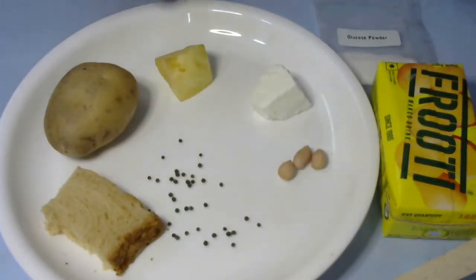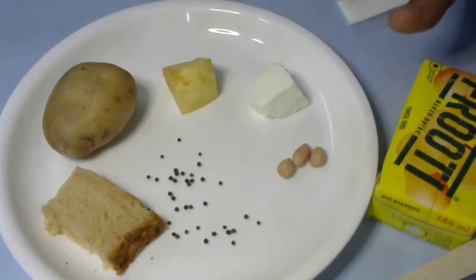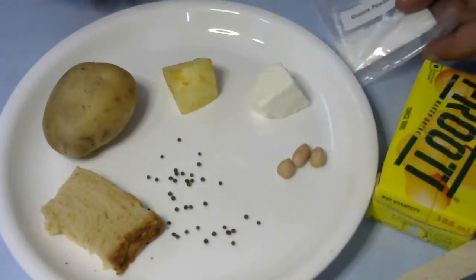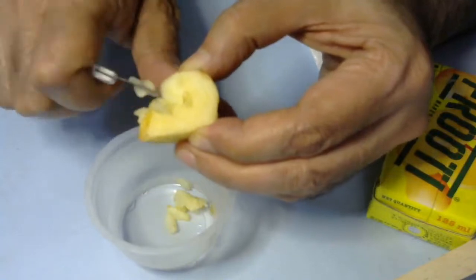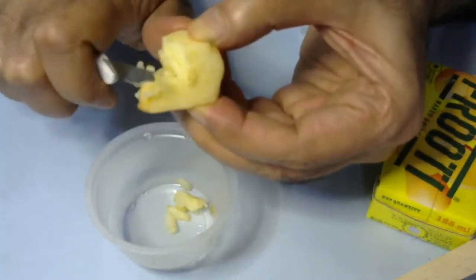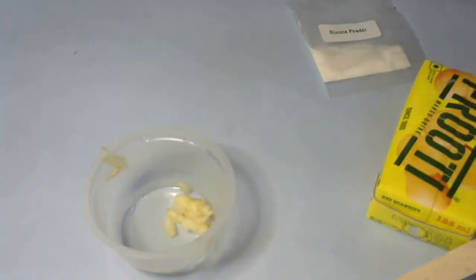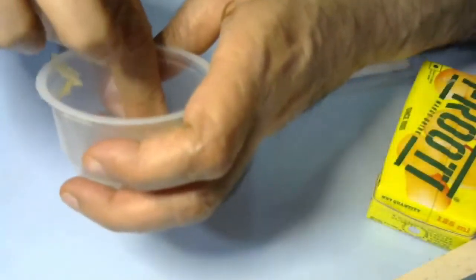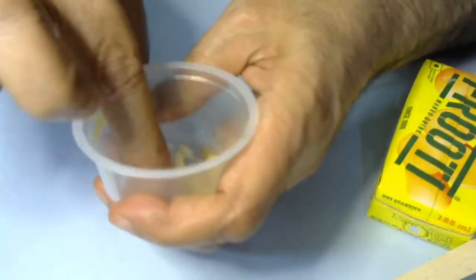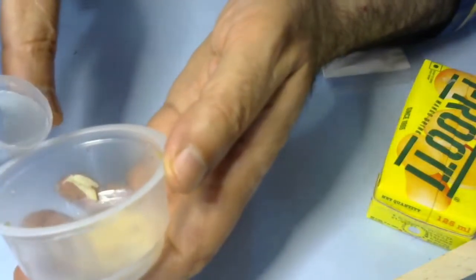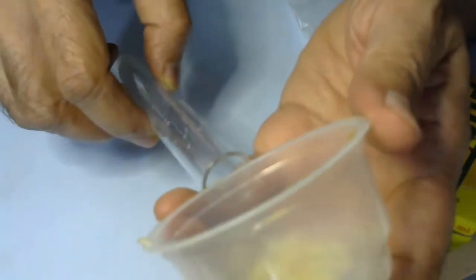We will start with glucose testing, for which we'll use one piece of apple, some fruit juice like this mango juice fruity, and actual glucose to see which comes out better. First, we're making very small pieces of this apple so it's easy to extract the juice. We'll crush it a little bit so the juice comes out, then add a little water and put this whole solution in the test tube.